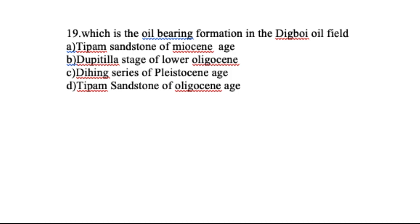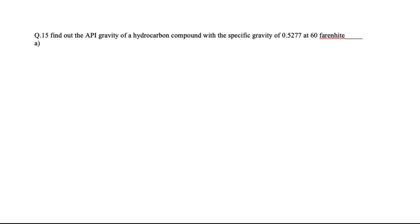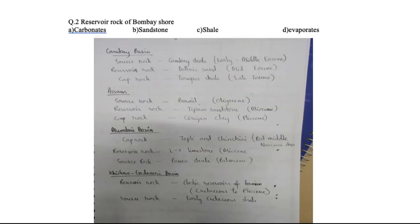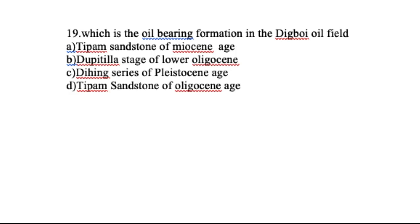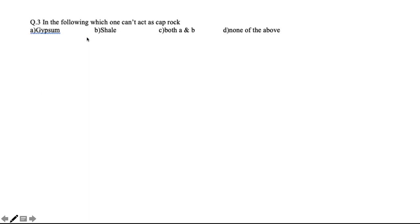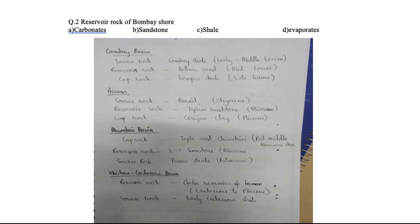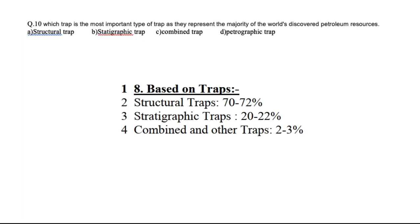Question: which is the oil-bearing formation in the Digboy oil field? In Digboy we have Tipam sandstone — option C. Tipam belongs to Assam. Oil-bearing means reservoir rock, and the reservoir rock here is Tipam sandstone of Miocene age. If they asked about the source rock, that would be Oligocene, but here they ask about oil-bearing (reservoir) rock, so the answer is Tipam sandstone of Miocene age. Please go through this — it is very important.